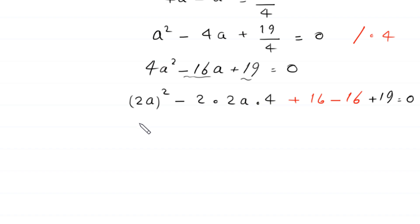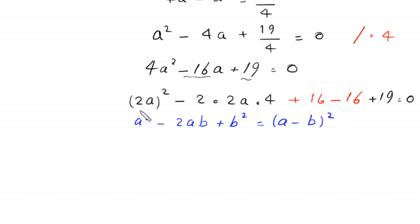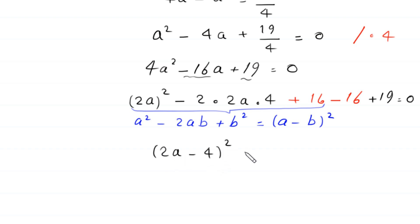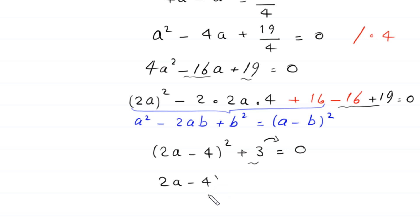Using the algebraic identity a squared minus 2ab plus b squared equals (a minus b) whole squared, the expression (2a) squared minus 2 times 2a times 4 plus 16 becomes (2a minus 4) whole squared. So we have (2a minus 4) squared minus 16 plus 19 equals 0, which gives (2a minus 4) squared plus 3 equals 0. Moving 3 to the right hand side: (2a minus 4) squared is equal to negative 3.